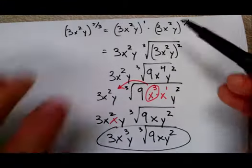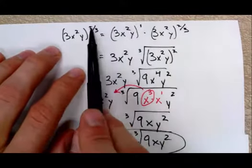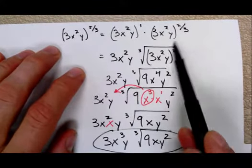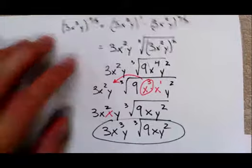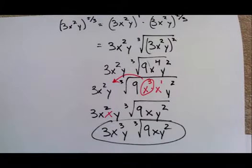So several steps there, but thinking of that mixed number, 5 thirds as 1 and 2 thirds, can make that process a little bit faster. So hopefully that helped. Good luck!